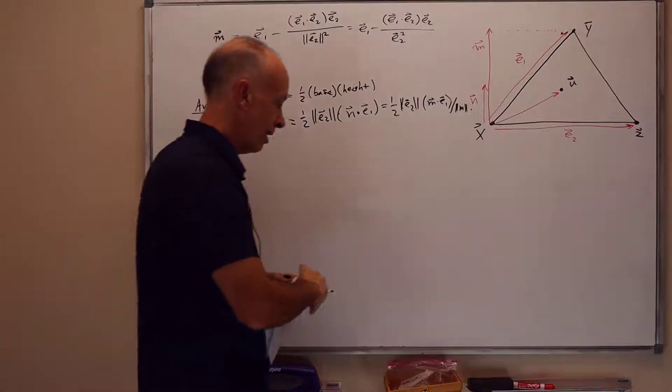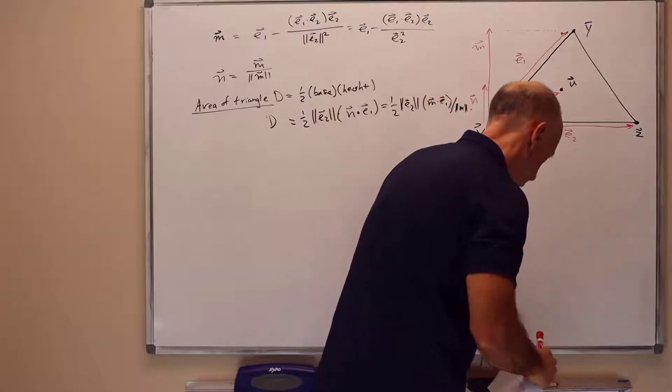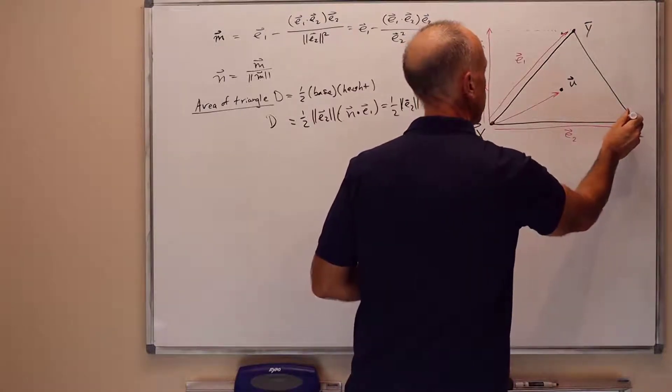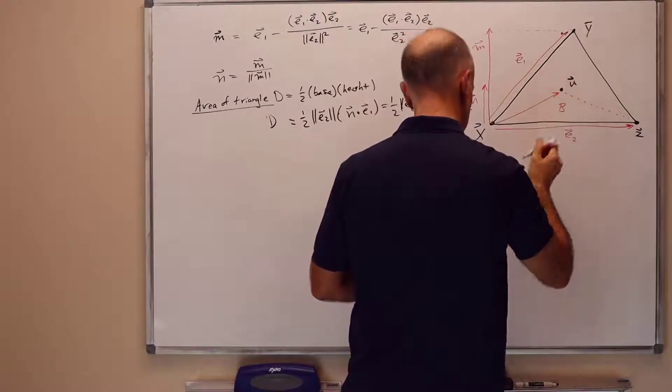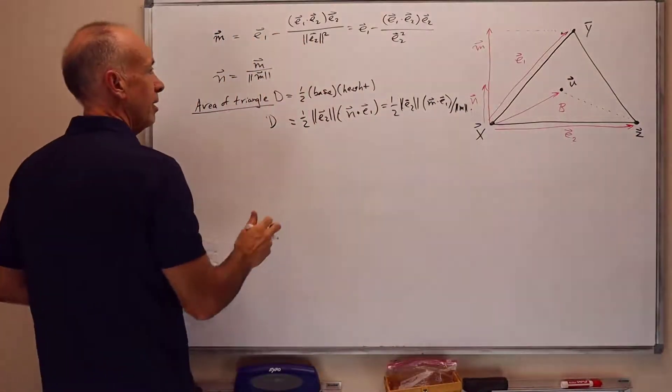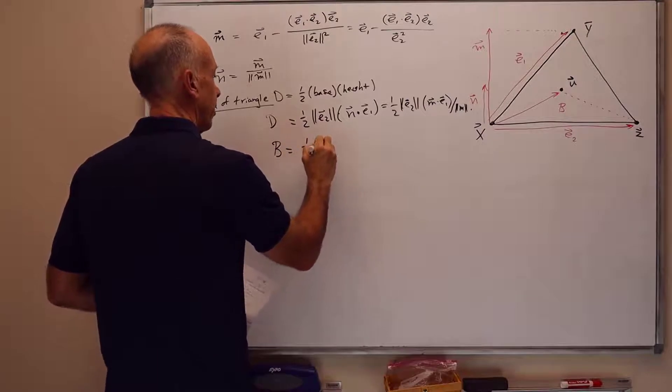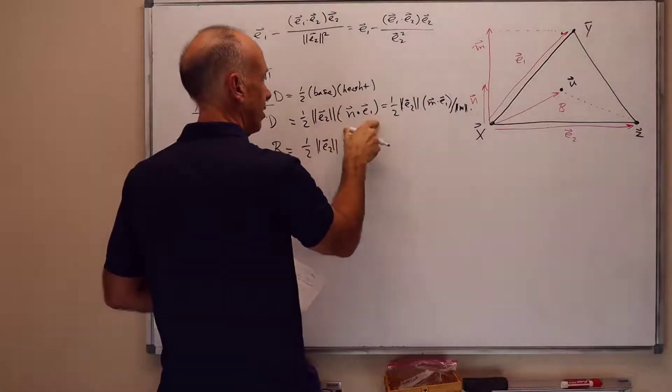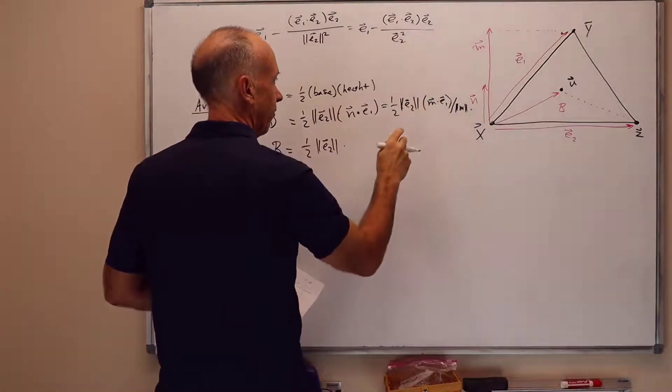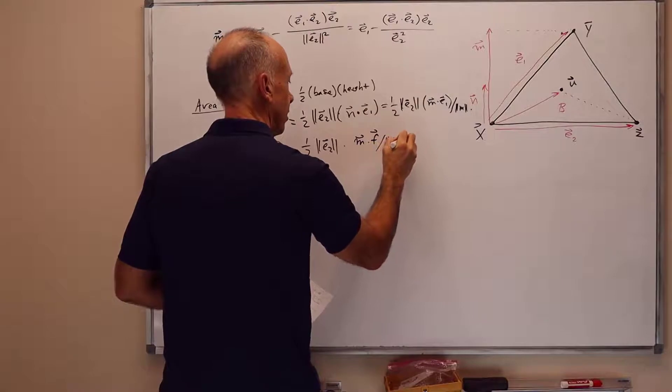Now we also want to have another area, which is the area B. So the area of the space triangle is similarly B is one-half the magnitude of e2. That's the base times the same formula, but with f instead of e1. So that's m dot f over the magnitude of m.